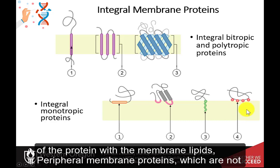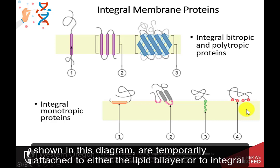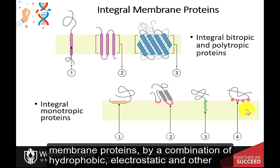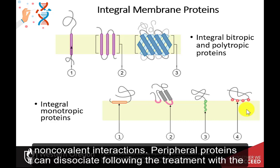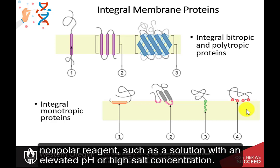Peripheral membrane proteins are temporarily attached to either the lipid bilayer or to integral membrane proteins by a combination of hydrophobic, electrostatic, and other non-covalent interactions. Peripheral proteins can dissociate following treatment with a polar reagent, such as a solution with an elevated pH or high salt concentrations.